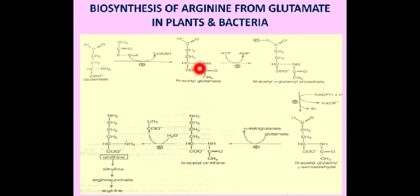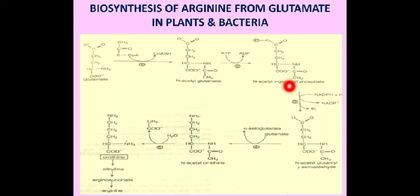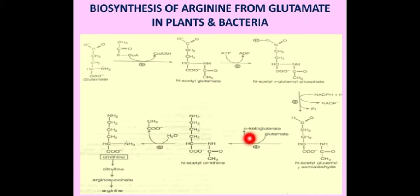As a result, N-acetylglutamate is synthesized. This N-acetylglutamate is then phosphorylated by ATP to form N-acetyl-gamma-glutamyl phosphate. The latter is then reduced by NADPH to produce N-acetylglutamyl-gamma-semialdehyde. In the fourth step, this N-acetylglutamate-gamma-semialdehyde is transaminated by aminotransferase to form N-acetylornithine, with glutamate serving as the donor of the amino group.